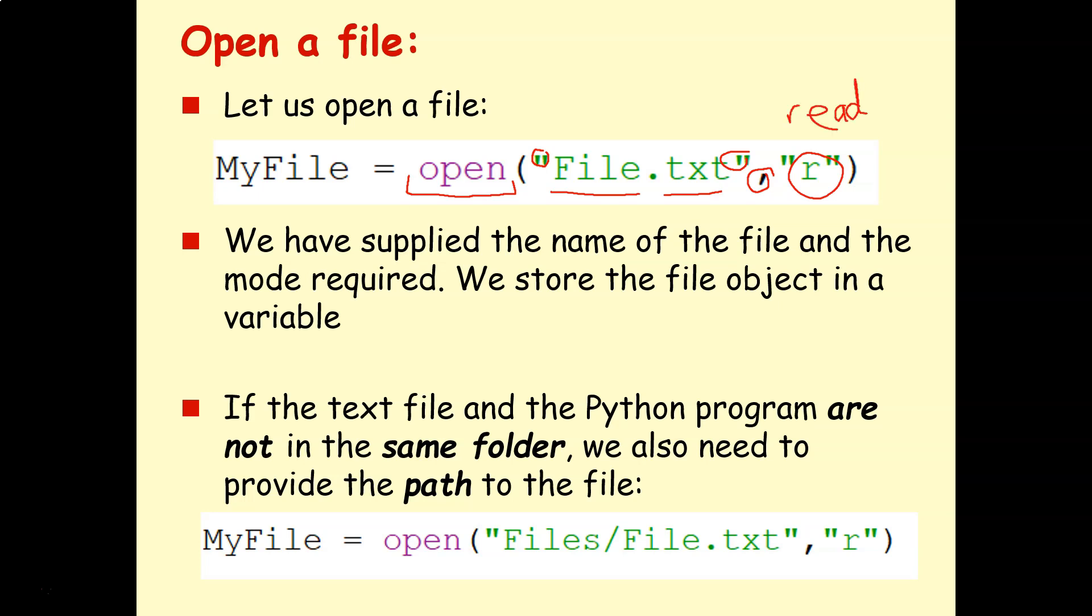That means we're going to read it in, but we're not going to write it or change it or edit it in some way. And once we've done all that, we can take that file object and we can save it as a variable here. So I open it, give it the name and the file extension, tell it which mode I want to open it in, which is the read mode. And then we're going to store it here as my file. Again, you don't have to use my file. You can use any name you want.